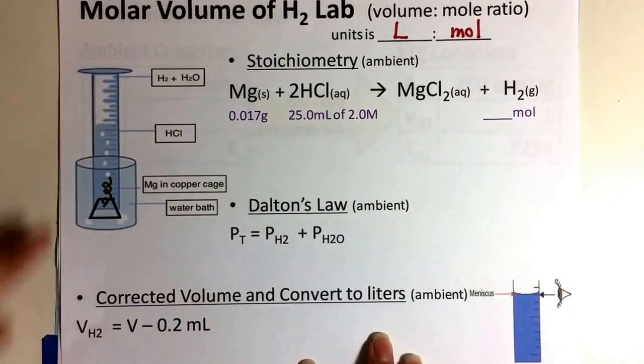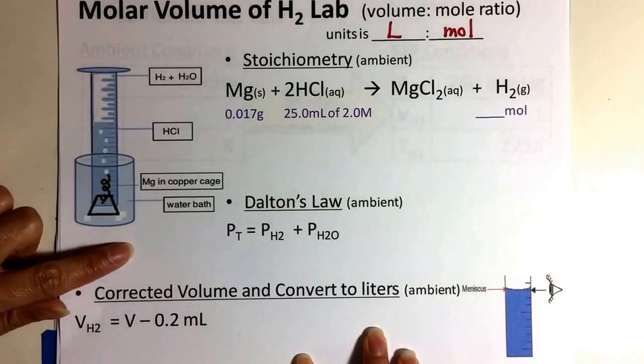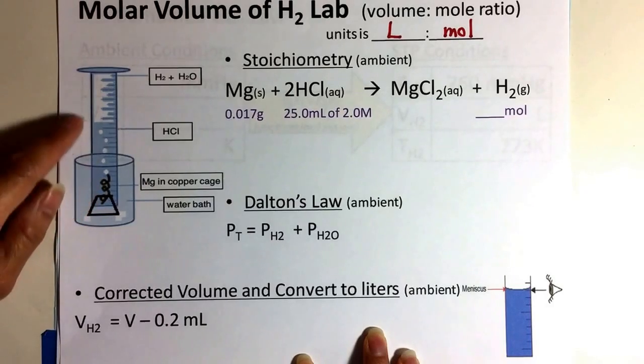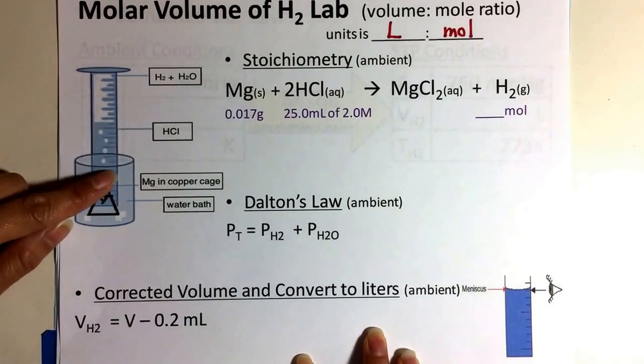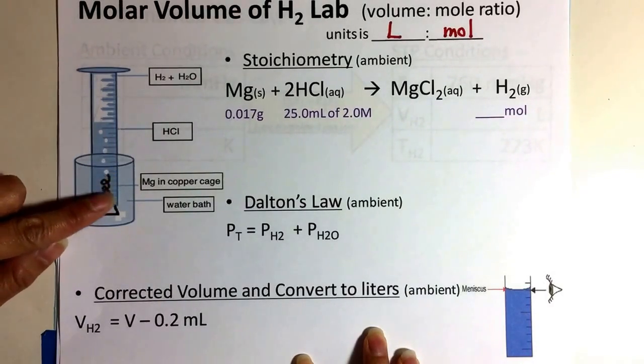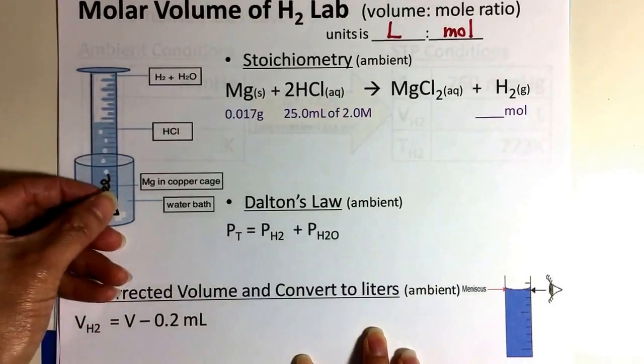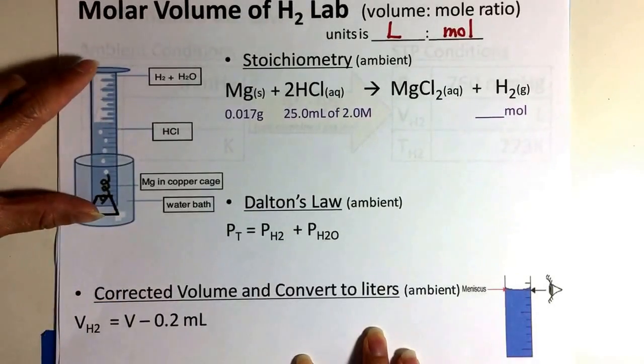So we have here, just to remind you of the setup, we took a piece of magnesium, we put it in our copper cage, and we poured some HCl into our graduated cylinder. And then we buffered it with a little water to make sure that the reaction doesn't take place immediately. We capped it, and then we inverted it into a water bath.